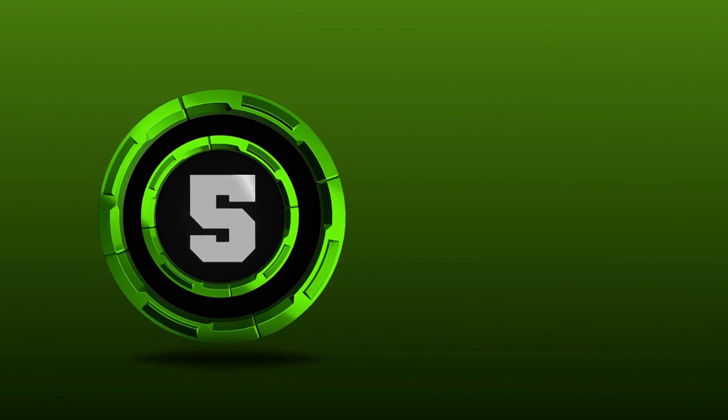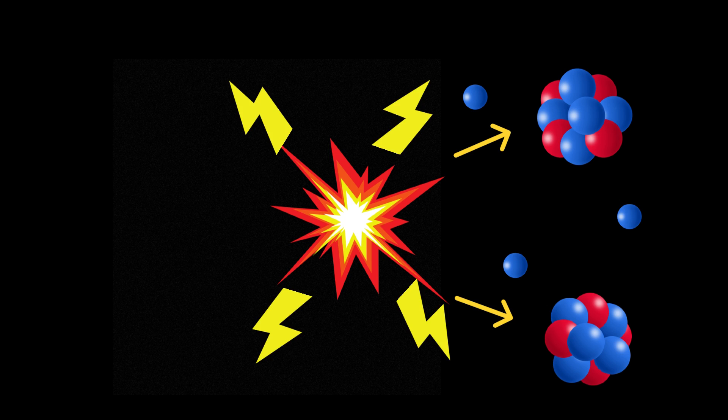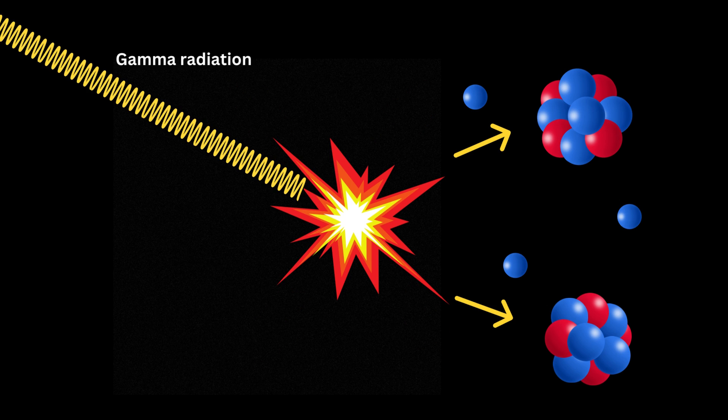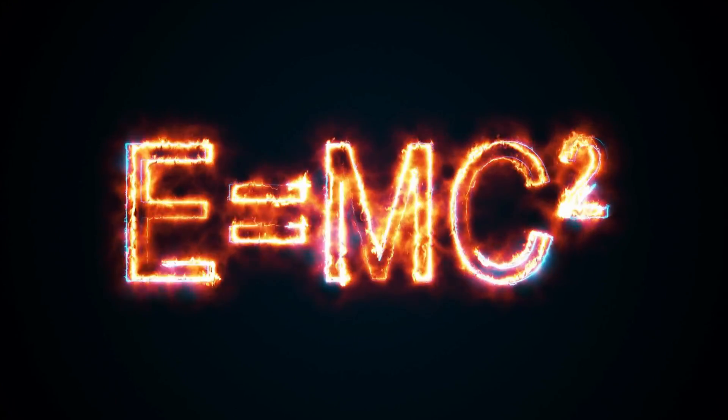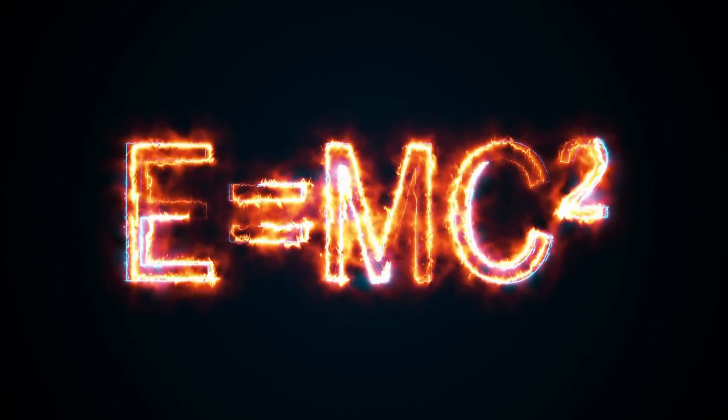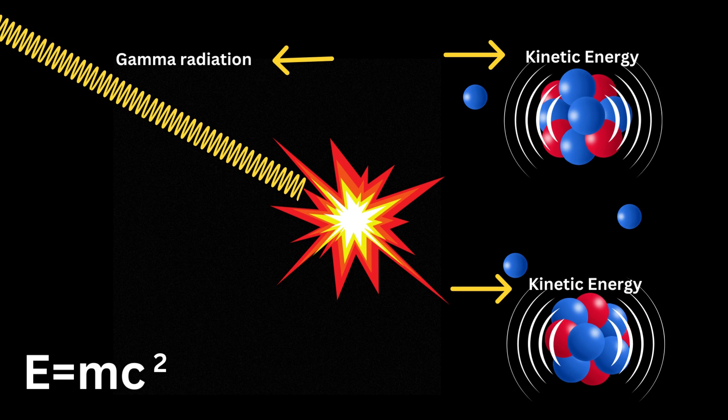Step 5: Energy release. A vast quantity of energy is released during fission in the form of gamma radiation as well as the kinetic energy of the fission fragments. E equals mc squared, the famous equation by Albert Einstein, states that the conversion of mass produces the energy.